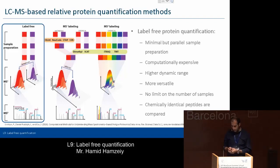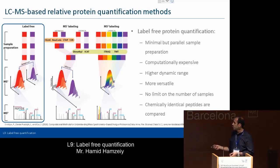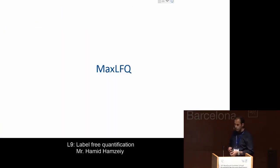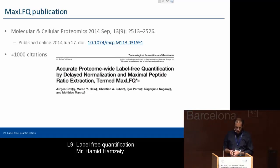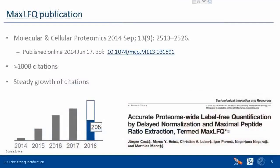In label-free quantification, we are trying to compare identical peptides. Unlike MS1 and MS2 labeling, where peptides are equivalent with a mass shift, in LFQ we have to find the exact same thing and compare them together. This is the MaxLFQ publication — if you use MaxLFQ, this is the paper you should cite. It's already had about a thousand citations and citations are steadily growing, showing the community is adapting this algorithm pretty well.